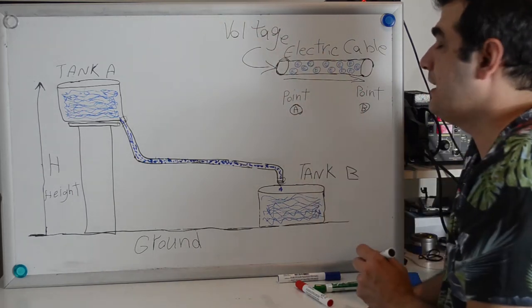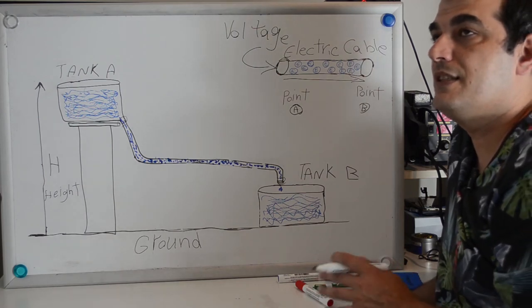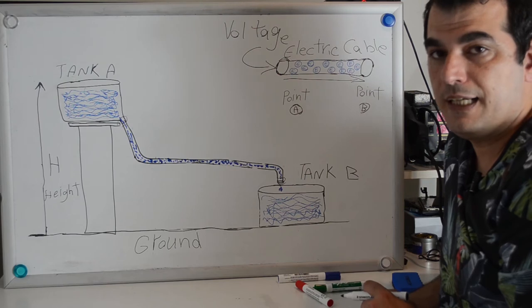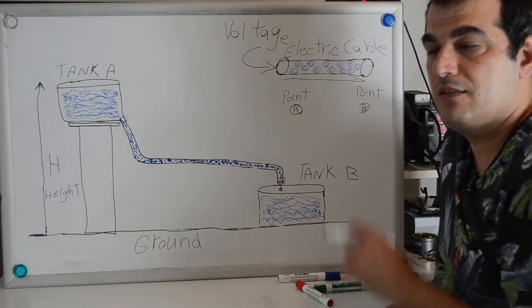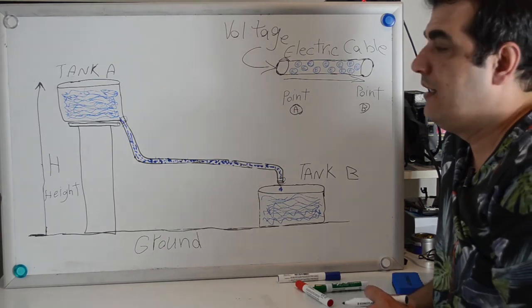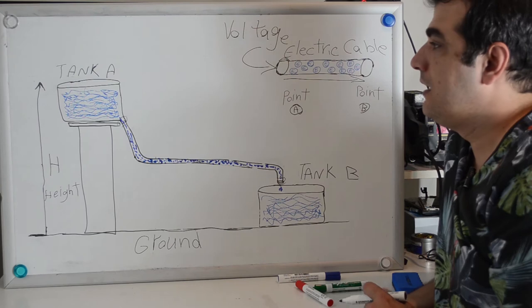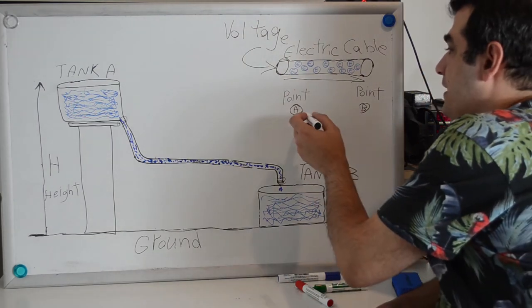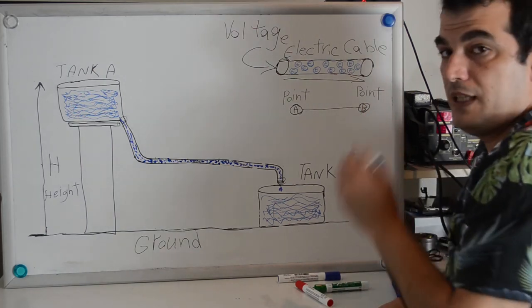Now I talk about voltage. Voltage is the same as electricity, or we can say the unit for measuring electricity is voltage. If I say it scientifically, the electric potential difference between two points is called voltage.